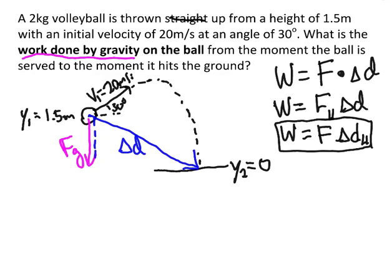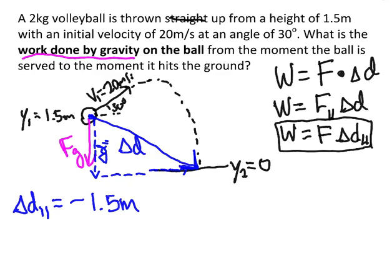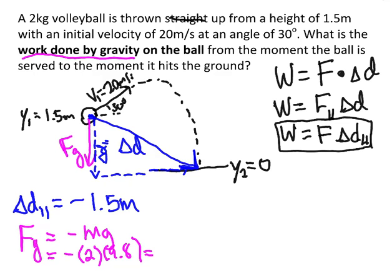Delta D will have a component in the Y direction and in the X direction. The part that's parallel to the force of gravity is definitely that Y direction component — so that's your delta D parallel. That's the piece I'm really looking for. And delta D parallel is just how far down did the ball go? It actually doesn't matter that the ball went up and then came down — I'm just looking from the start to the finish. How far did the ball go in the vertical direction? It went down, so negative 1.5 meters.